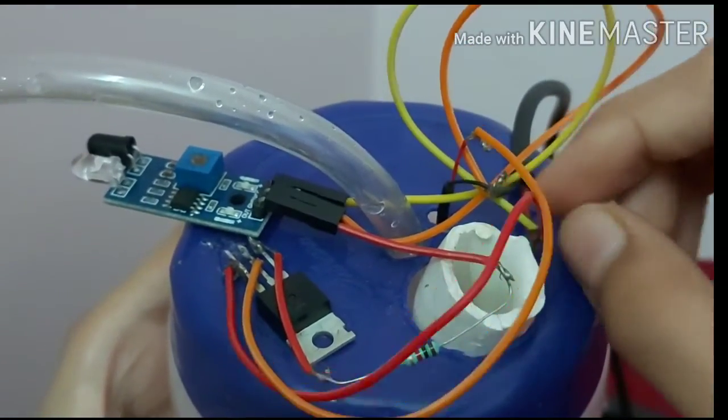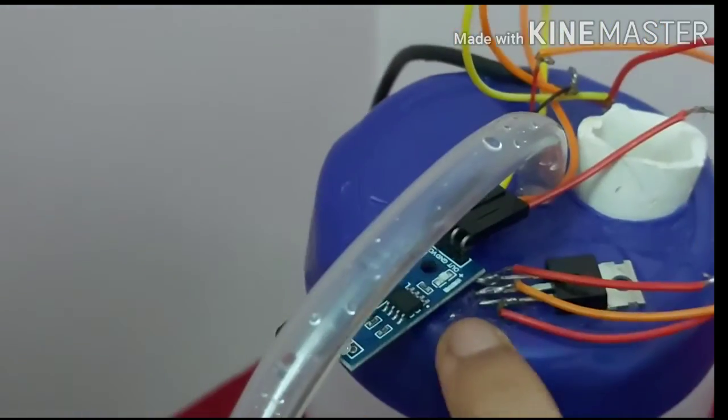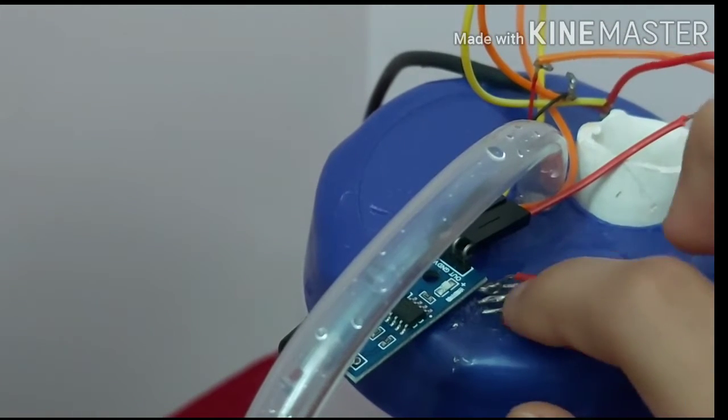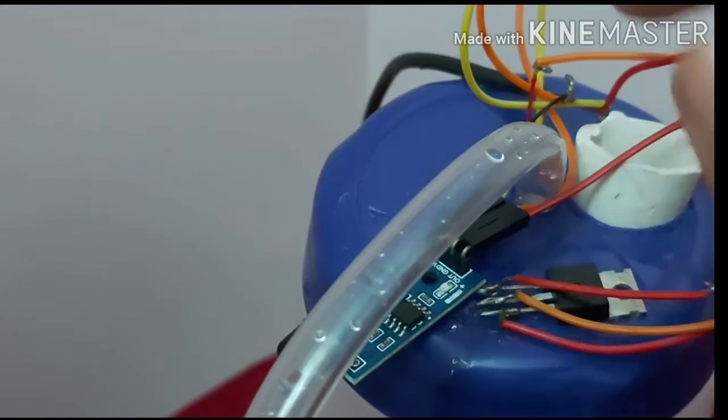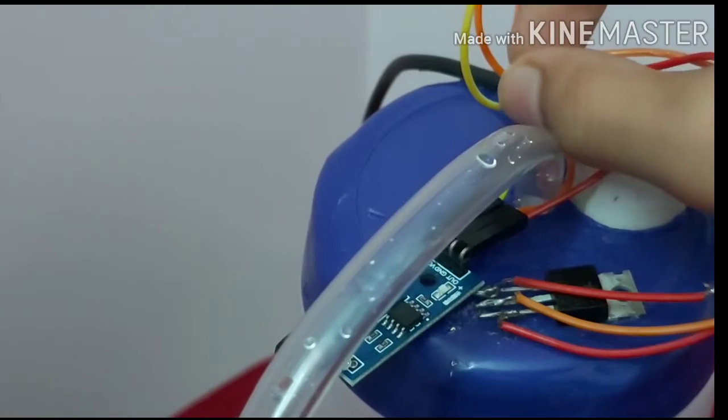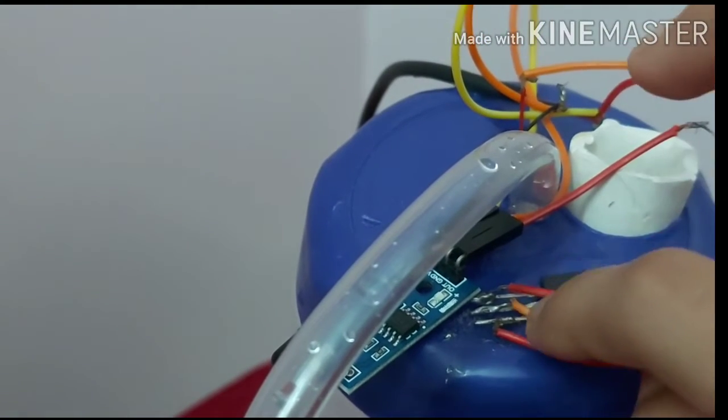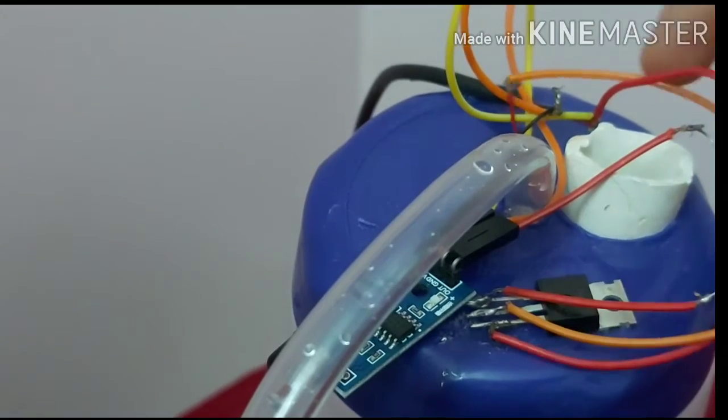And I have connected another wire to the collector pin. And we have to connect a wire from the emitter pin to the red colored wire, means positive wire of the pump. This is the orange wire, you can see.